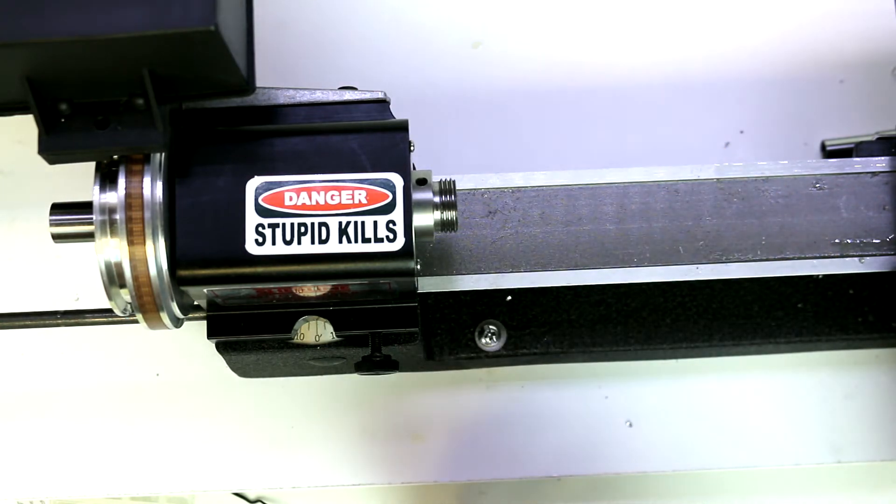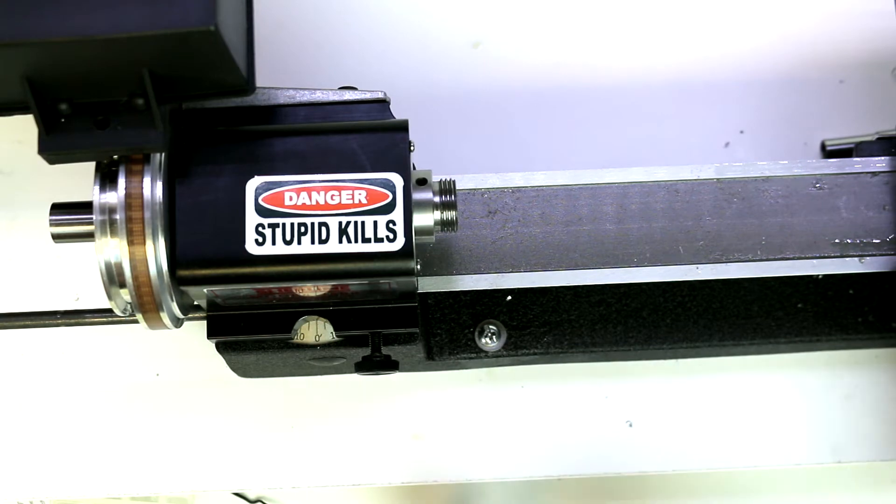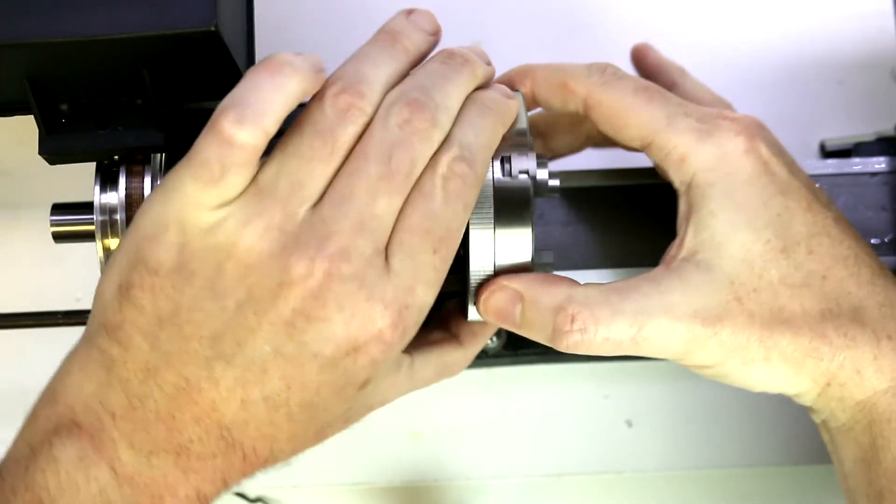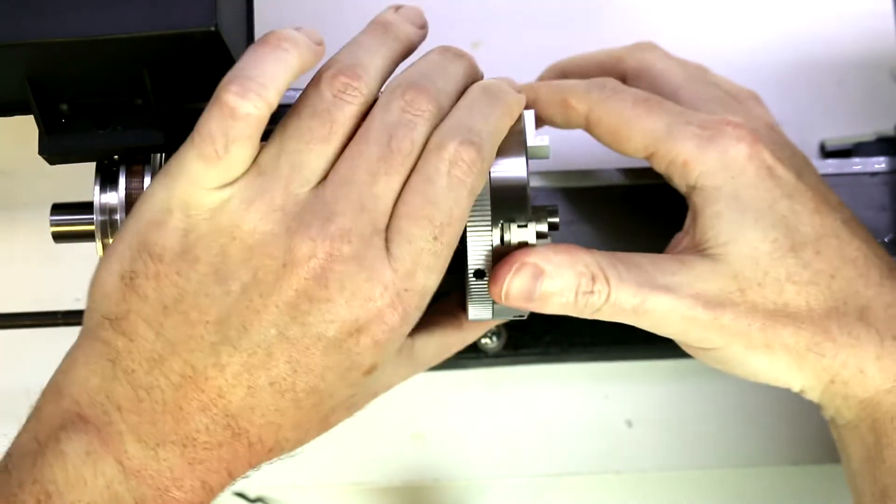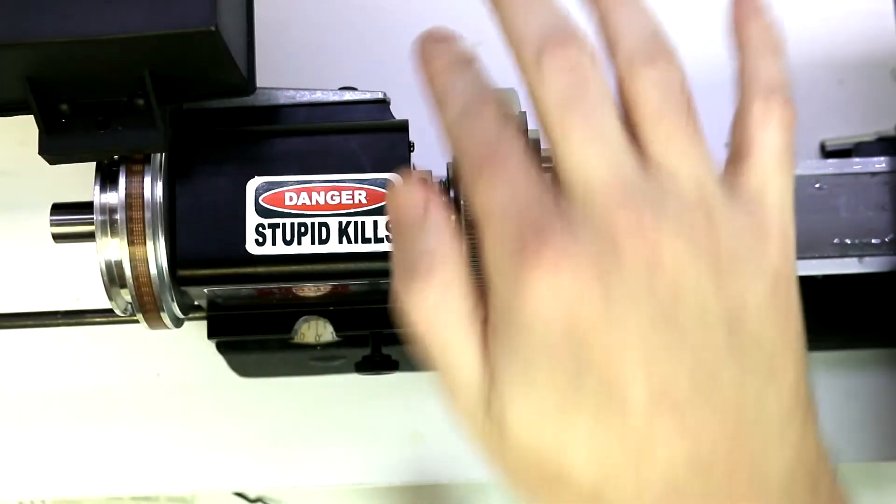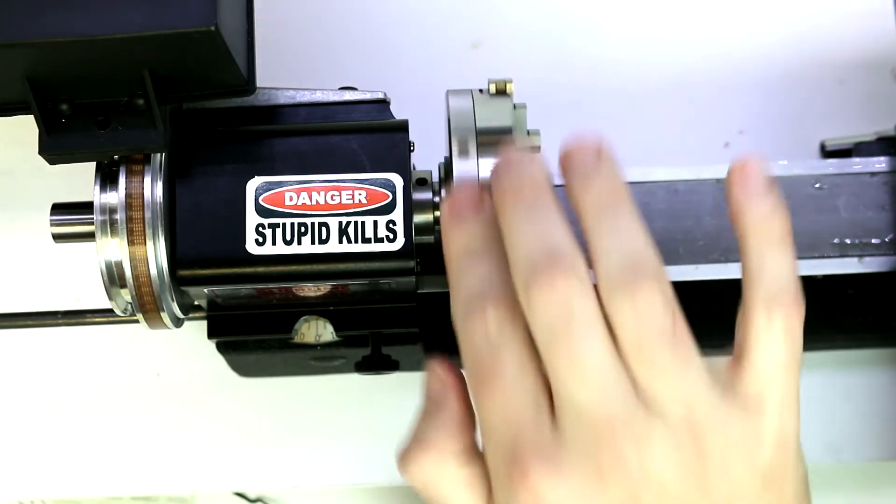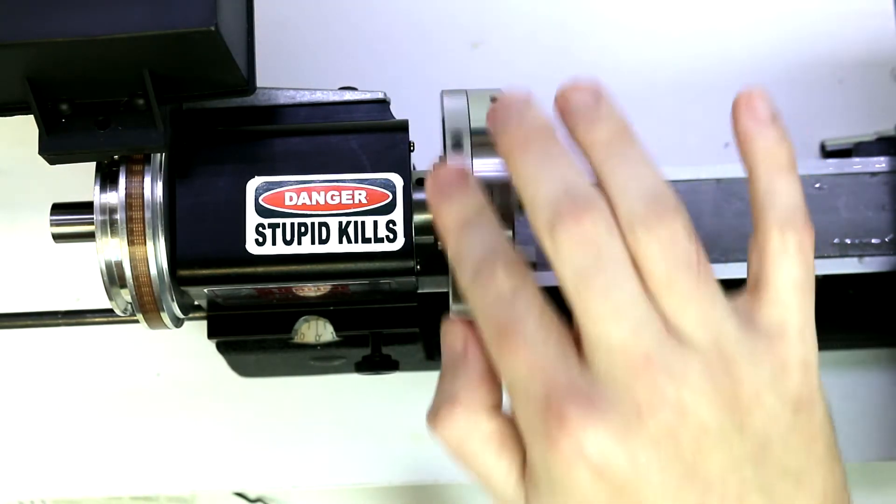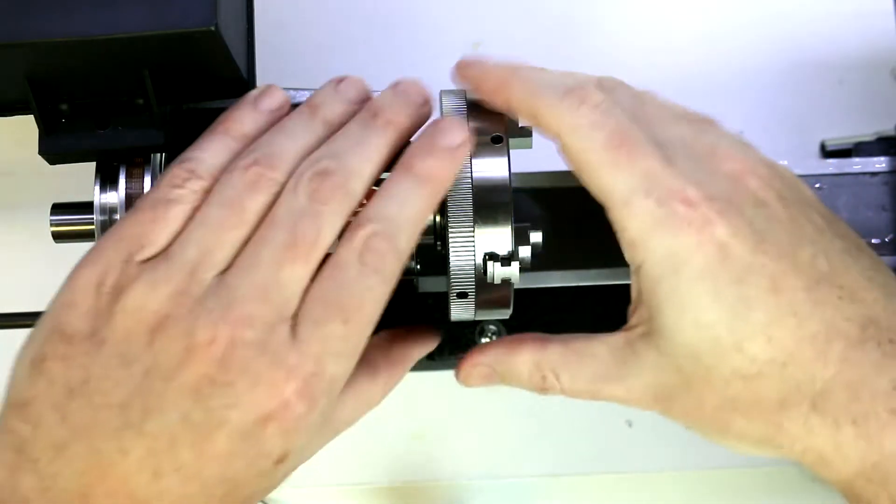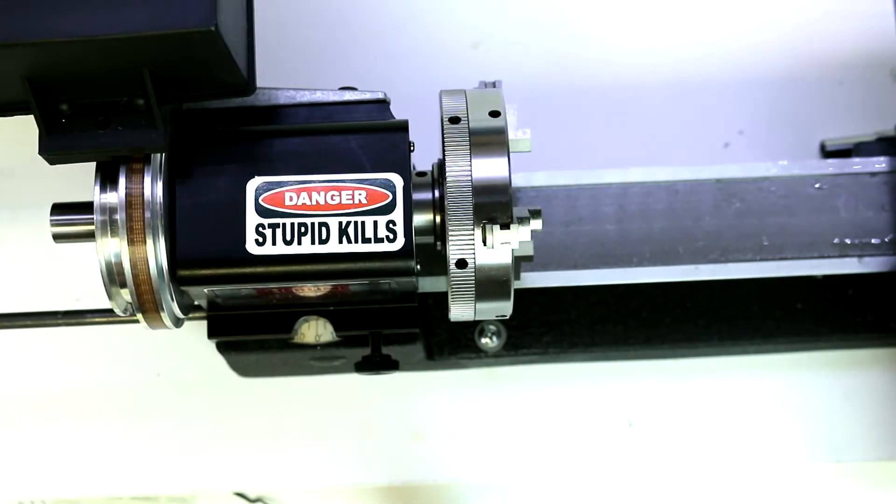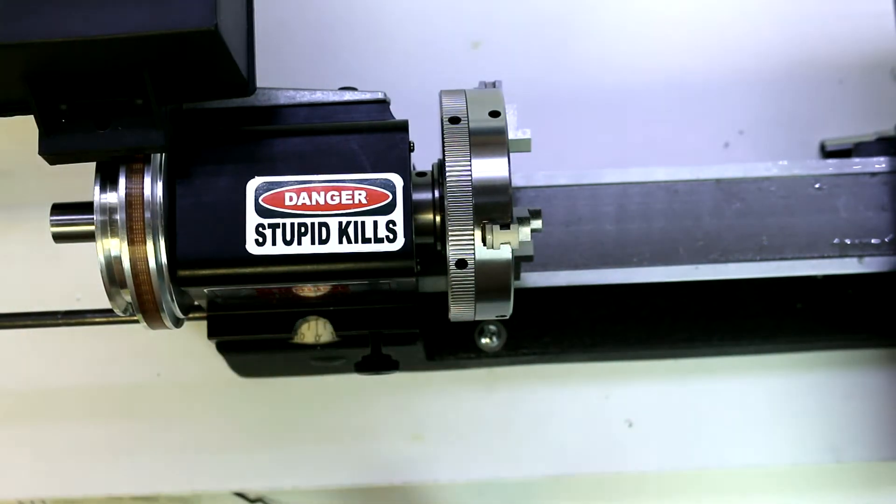We're going to look at a variety of workholding devices, and the first one we'll look at in detail in a following video is the three jaw chuck. I'm not going to go into the details in this introduction on the three jaw, but I'm going to use it as an example of how it can secure a workpiece. I'm just going to put it on there hand tight. Normally you would want to tighten that down with tommy bars.